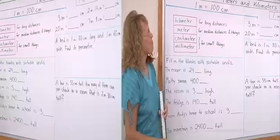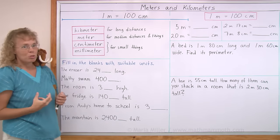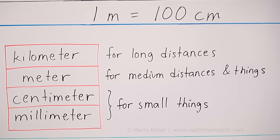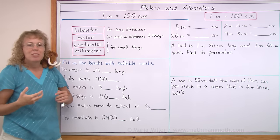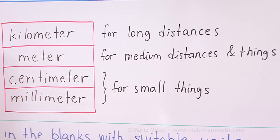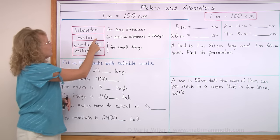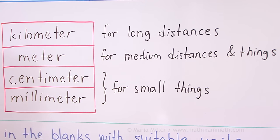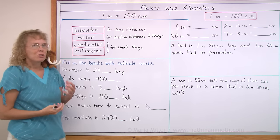The units of length that we have in the metric system are these here, used most often. Kilometer is used for long distances, like for example if you go bicycling somewhere or distances between towns, and this kilo here actually means a thousand. So one kilometer is a thousand meters. So that's a long unit of length. And then meters, I showed you one meter. It would be for medium-sized distances or things, for example to measure the width of a room or maybe how long a house is.